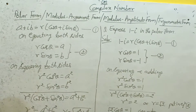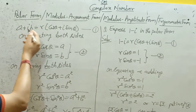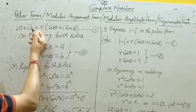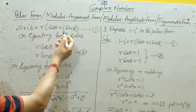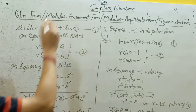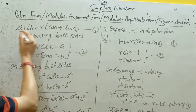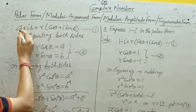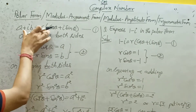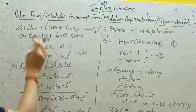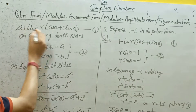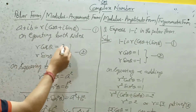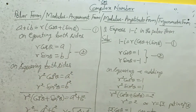First we will discuss the procedure. Let us suppose A plus iB is a complex number. It can be written as A plus iB equal to R in bracket cos theta plus i sine theta. Let this be equation one. Now on equating both sides, R cos theta equals A (real part) and R sine theta equals B (imaginary part). Let this be equation two.